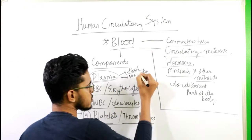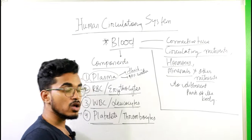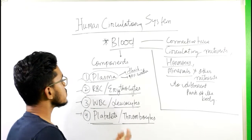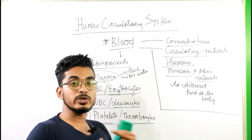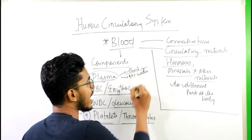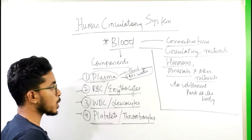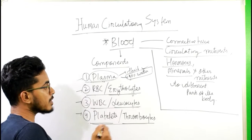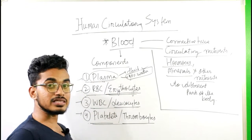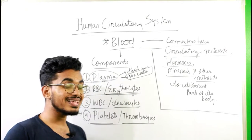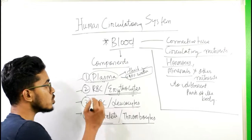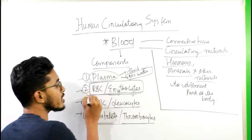Plasma is a fluid — it is the reason for the blood to be fluid, because plasma gives the fluidity property to the blood. Plasma itself is a fluid and contains 90% water. Coming to RBC, or erythrocytes — RBC contains hemoglobin, which is a red pigment. The role of hemoglobin is to carry oxygen, so RBC is helpful for carrying oxygen in the blood.